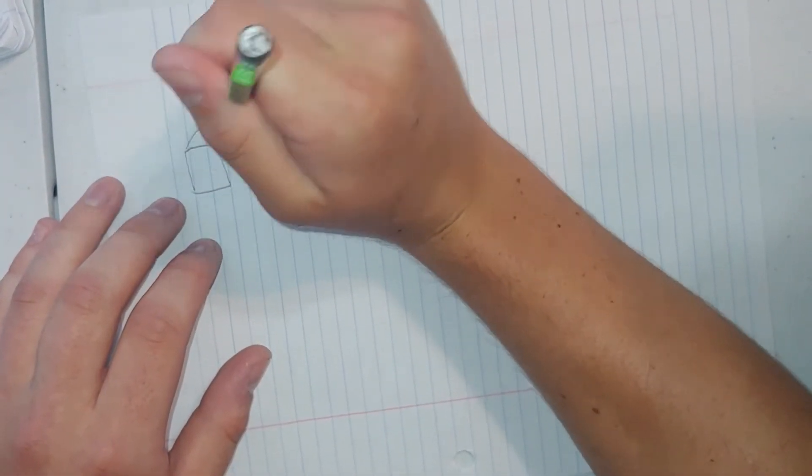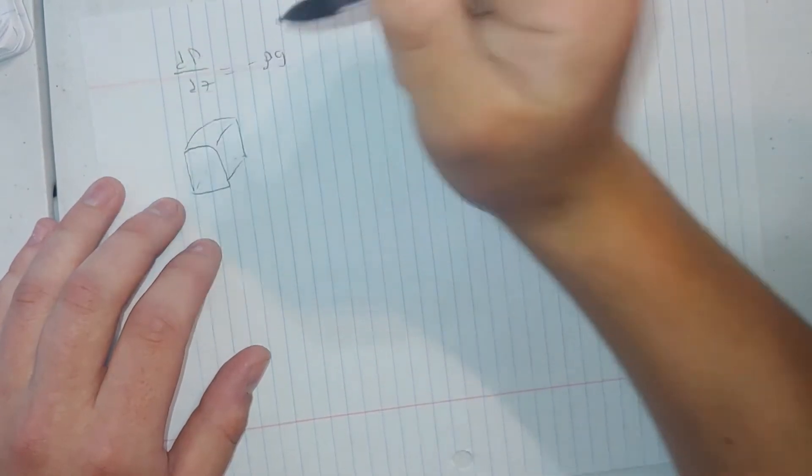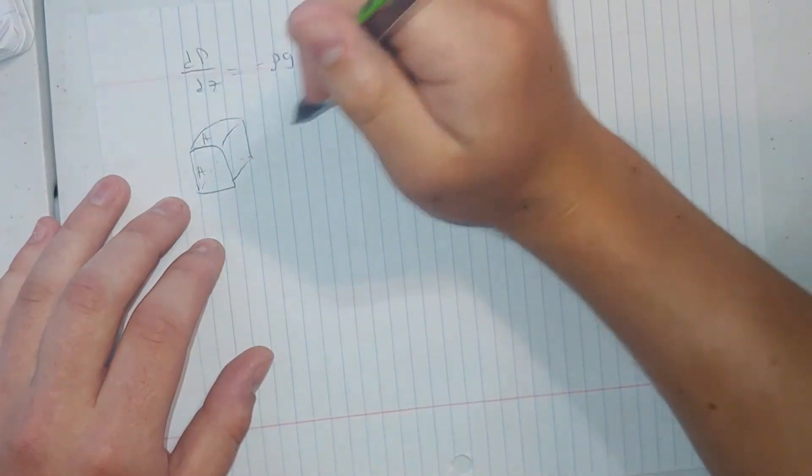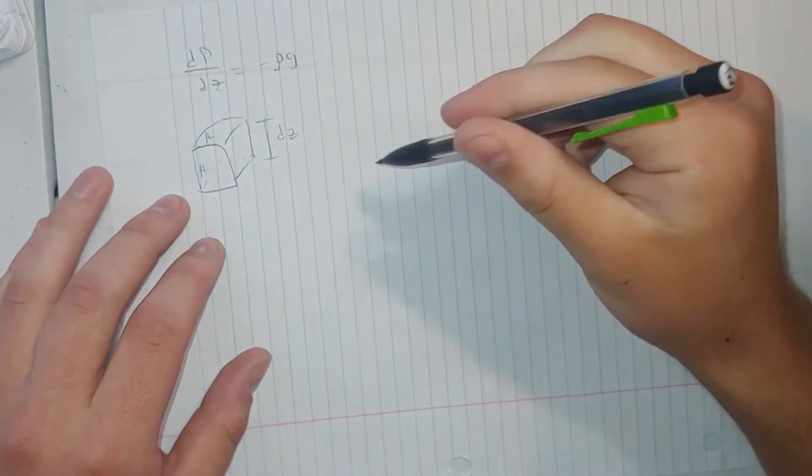So I'm going to start with a box here. Forgive the illustration. Each side is going to have an area of A and the whole box is going to have a height of dz.